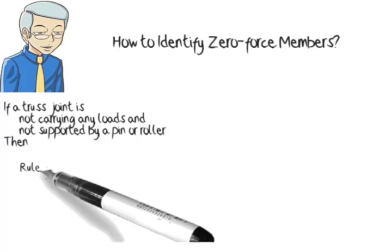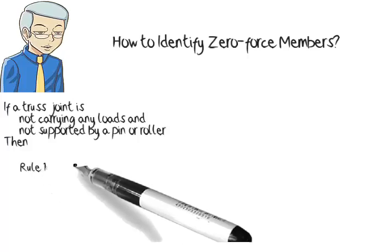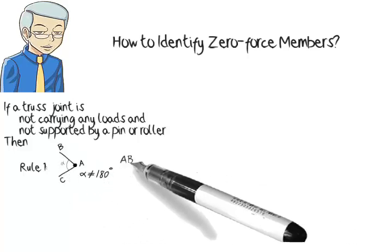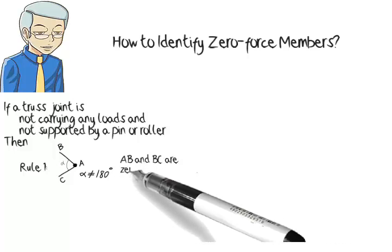Rule 1. If the joint connects two members only, where the angle between the members is different than 180 degrees, both members are zero-force members.